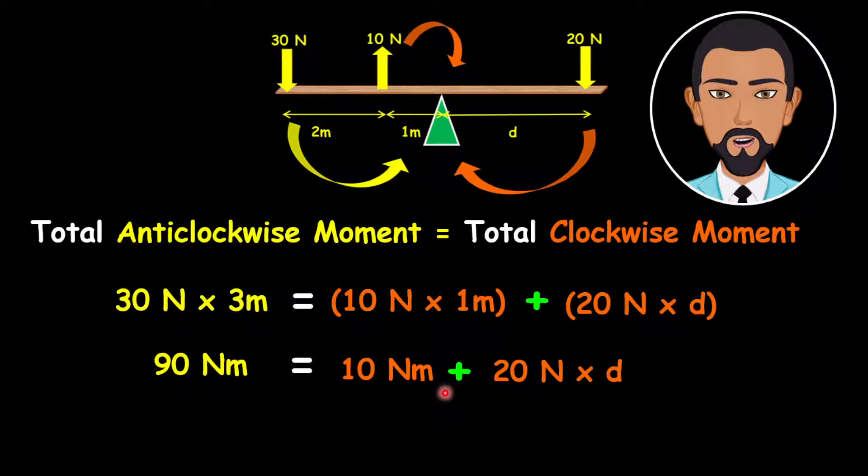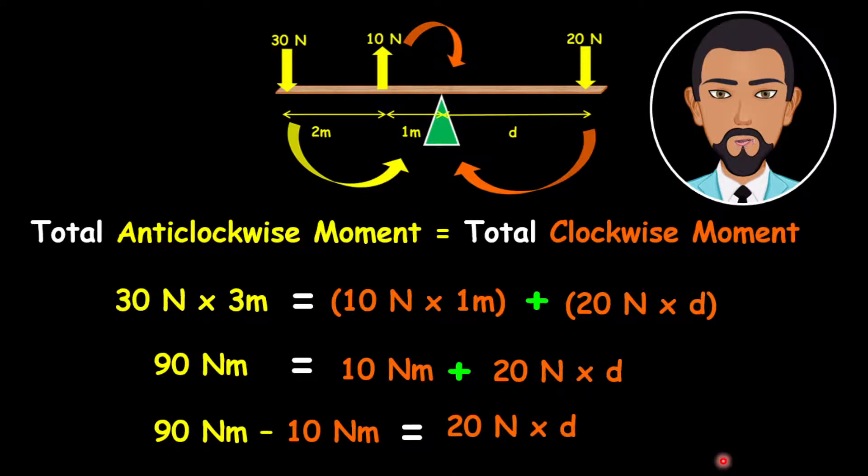Now the next step is to bring the like terms together. So we're going to take away this 10 newton meter from this side and bring it to this side. The way to do this is to go opposite the mathematical sign. So if it was added on this side, you're going to take it away from the other side. So here we're going to have 90 newton meter minus 10 newton meters, and it is equivalent to 20 newtons times D.